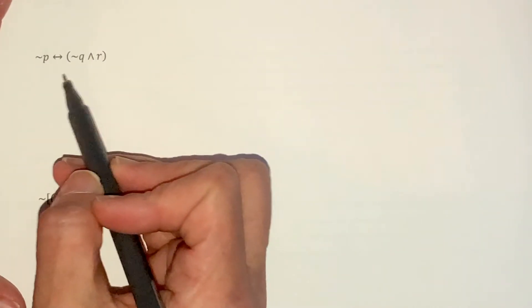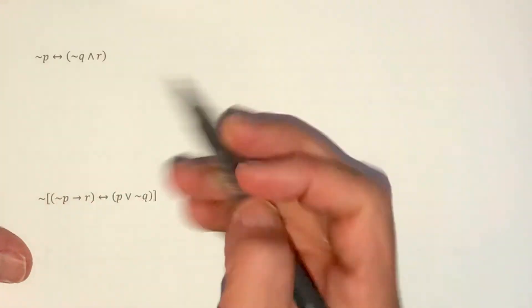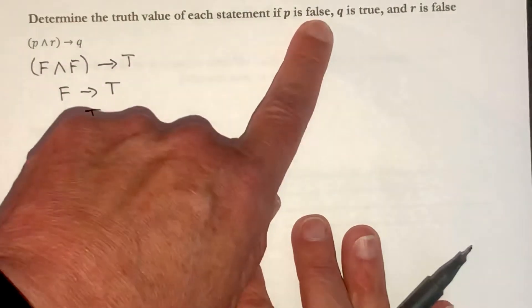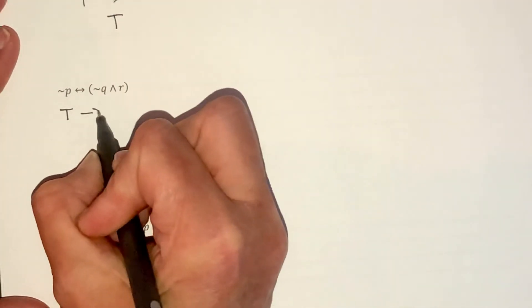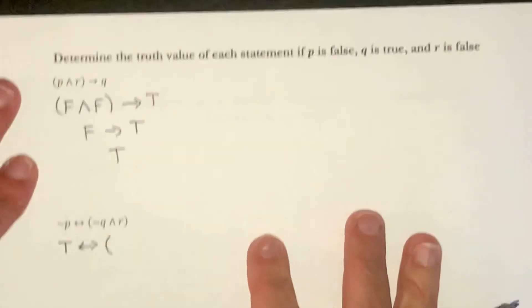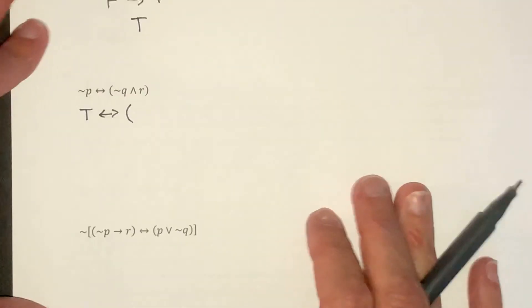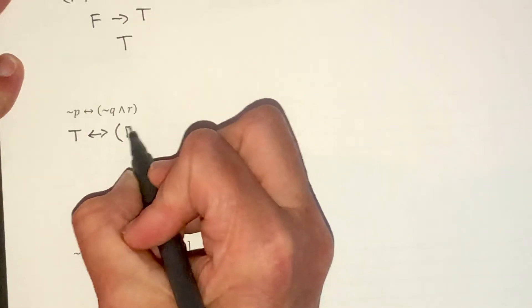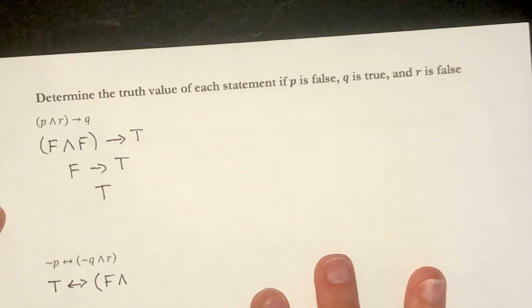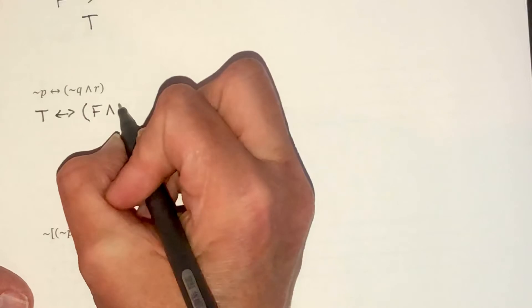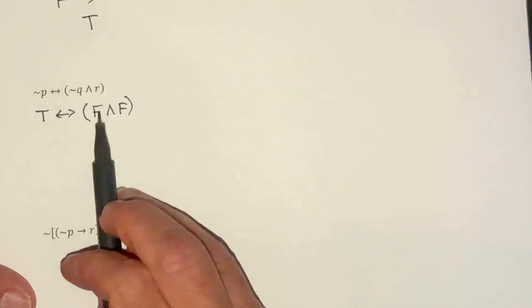Now I'm going to do the same thing here. I have not P. So P was false. So not false. That's going to be true. If and only if. Parentheses. Not Q. Q was true. So not Q is false. And R. R is false. So false and false. That's an and. So false and false is false.